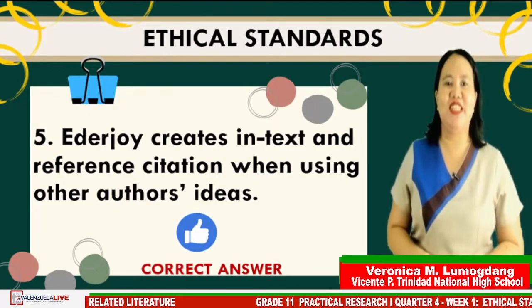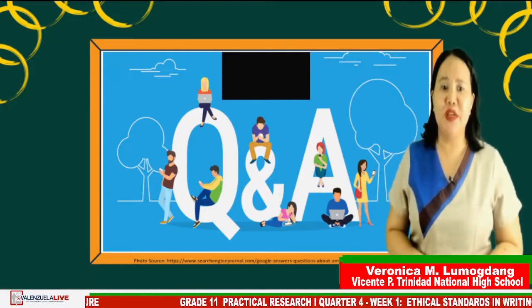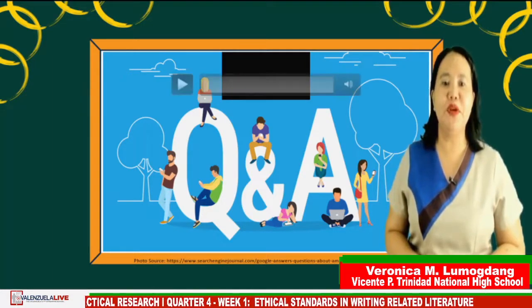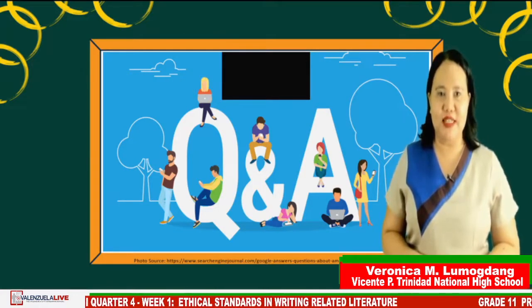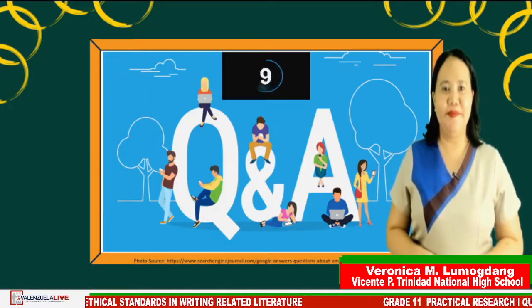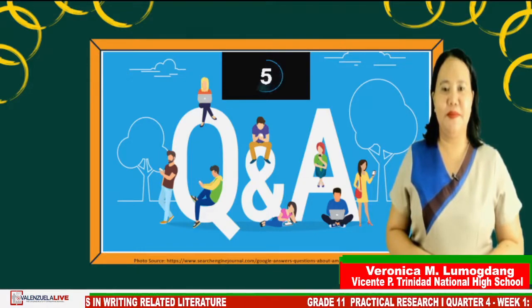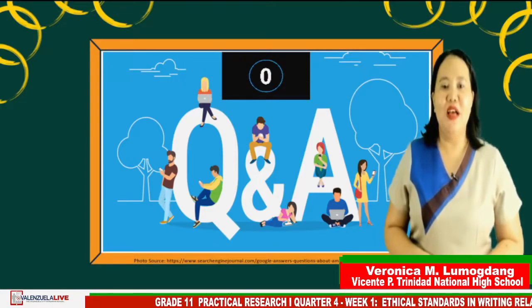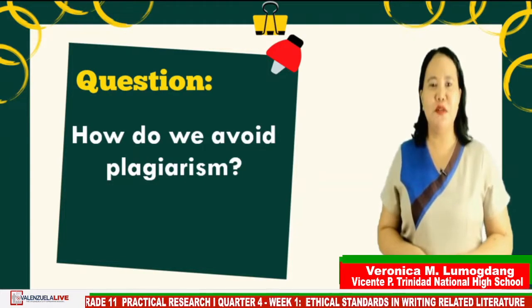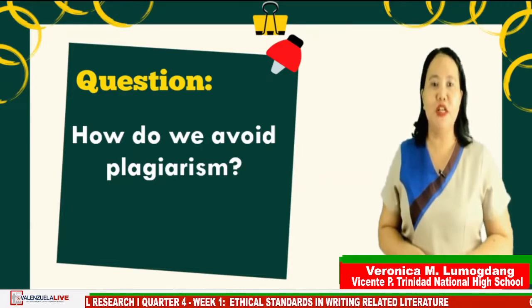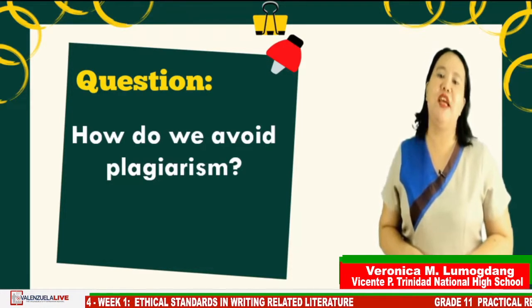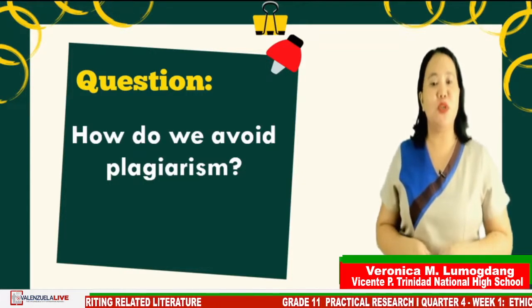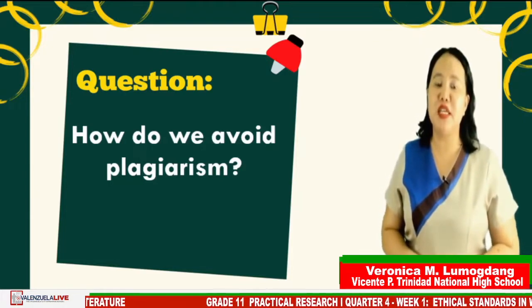We can give you a thumbs up for understanding ethical standards in writing related literature! You have 10 seconds to type your questions and the moderator will consolidate them. Question number one from grade 11 students of Laongbato National High School: how can we avoid plagiarism? We can avoid plagiarism by following the ethical standards when writing related literature. We need to create in-text and reference citation when using ideas of other authors.